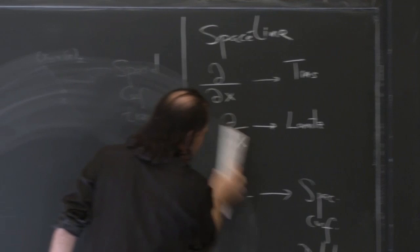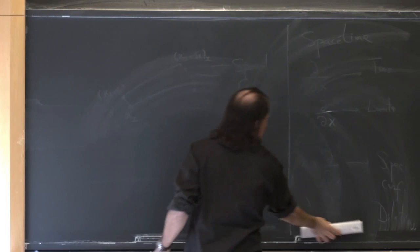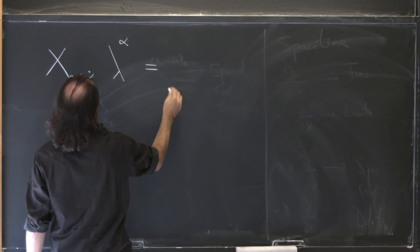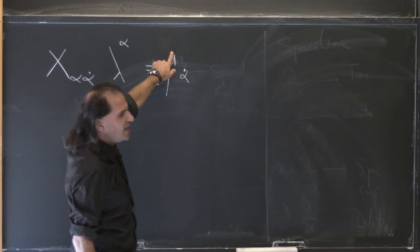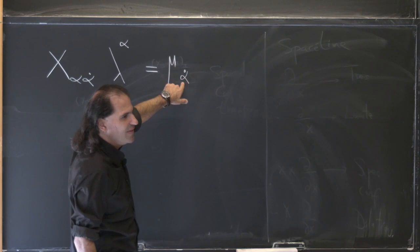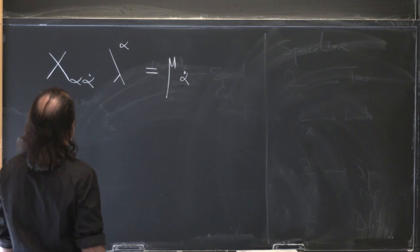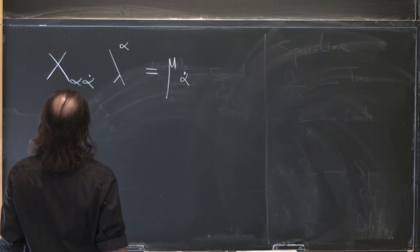So that in turn tells us that we can think of every point along this ray as satisfying an equation that looks like x-alpha-alpha-dot times lambda-alpha equals mu-alpha-dot. I'm not going to put a tilde on mu. So everywhere you see a mu, mu's are always going to have the alpha-dot indices. I want to imagine lambda and mu grouped together.